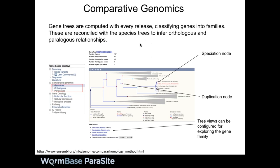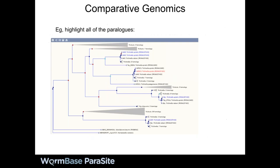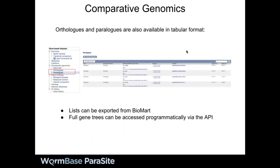To orient you to the gene tree view: gene nodes are at the ends of branches, and the colors of internal nodes indicate evolutionary relationships. Blue nodes are speciation nodes and red nodes are duplication nodes. You can configure these tree views to explore gene families — for example, highlighting all paralogs and expanding the tree to show just those. Another way to access this data is through tables via the orthologs and paralogs links on the left, where you can also view alignments between orthologs of interest.